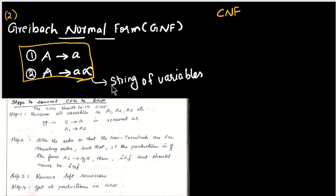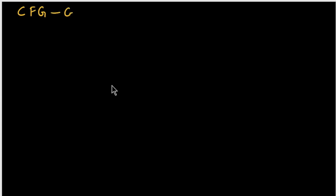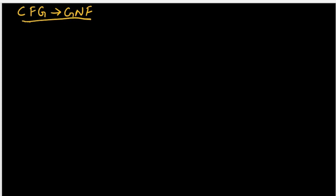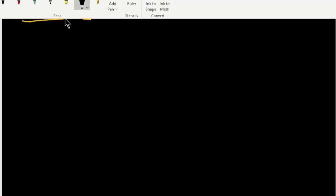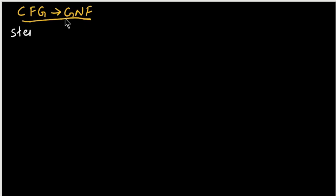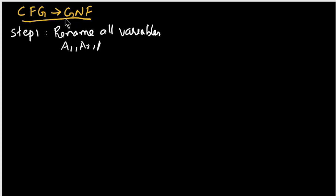To convert any CFG to GNF, there are four steps. Before applying these steps, the grammar must already be in Chomsky Normal Form. The first step is to rename all the variables, giving them names like A1, A2, A3, and so on.